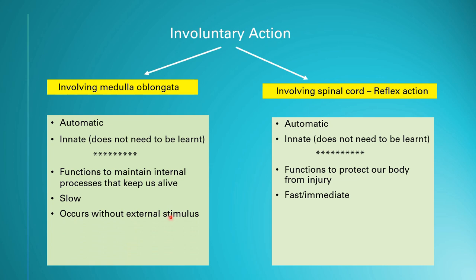For involuntary actions involving the medulla oblongata, they occur without external stimulus — you do not need anything to start your heartbeat or breathing. But for reflex action, you need something to trigger your hand to pull back, which is the external stimulus of touching something hot. These are the three differences between involuntary action involving the medulla oblongata and reflex action involving the spinal cord.